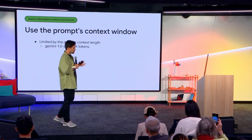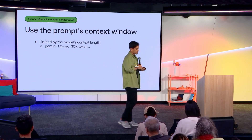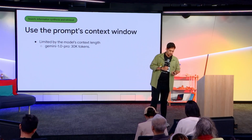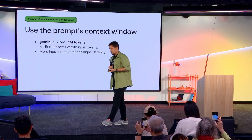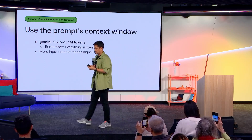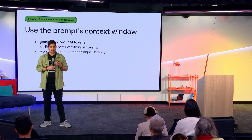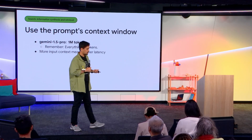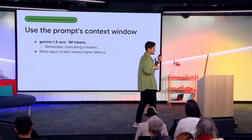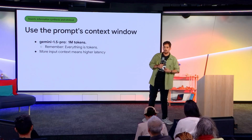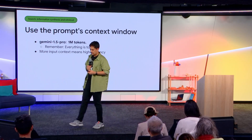A prompt's context window is limited by the number of tokens you can input. Gemini 1 Pro has 30k tokens, and 1.5 Pro has 1 million tokens. Everything is a token — every input you put in is a token, which means the more input you give, the slower it will become because it has to process each and every token. And tokens are what the cost is to run a prompt on an AI.